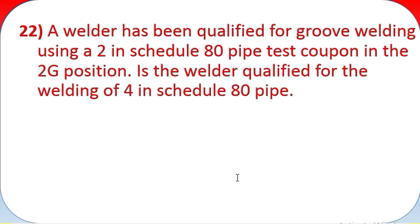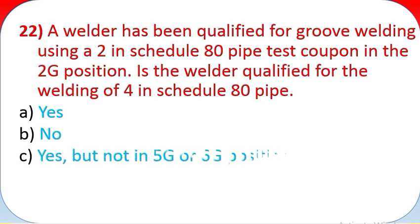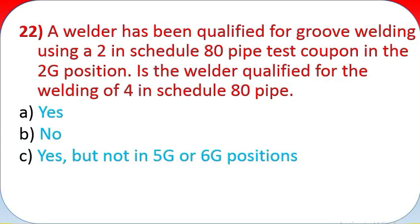Question 22: A welder has been qualified for groove welding using a 2 inch schedule 80 pipe test coupon in the 2G position. Is the welder qualified for the welding of 4 inch schedule 80 pipe? A - yes, B - no, C - yes but not in 5G or 6G positions.